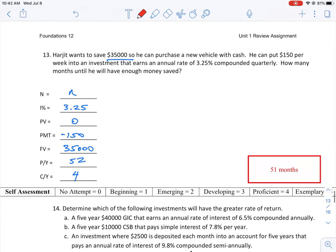Okay, so let's take a look at question number 13 where we're trying to calculate how many months this person would have to save money in order to get to $35,000 to purchase a new vehicle.